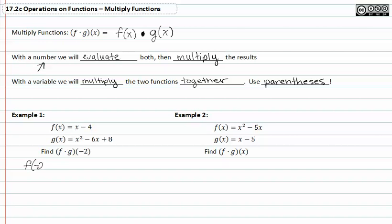So, f of negative two is equal to negative two minus four, or negative six. g of negative two, we'll evaluate that one as well. This again comes out to be four plus twelve plus eight, or twenty-four.